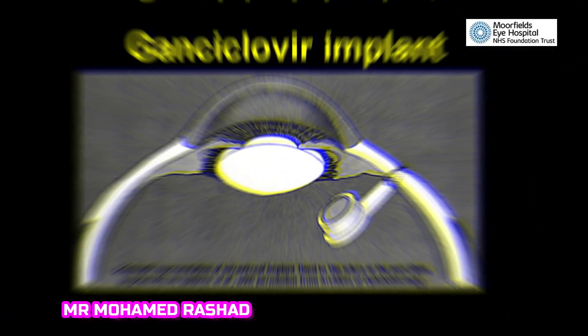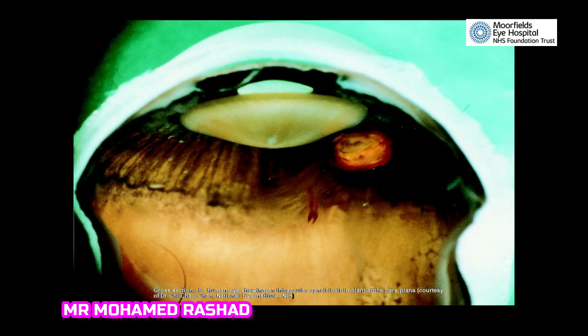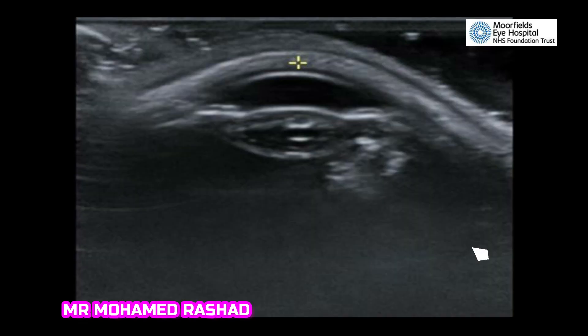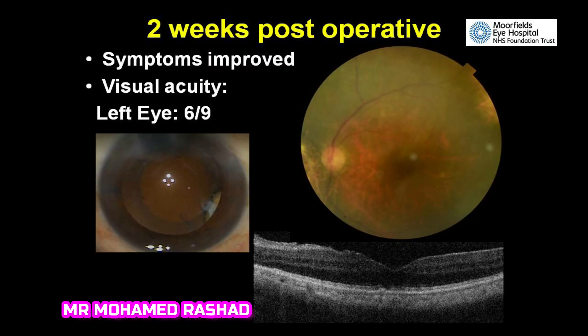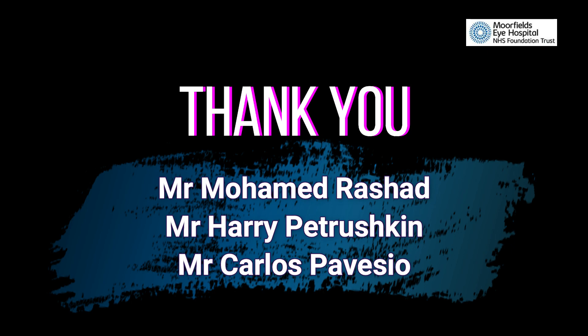We implanted the lens. This happened to be a cyclover implant, and this is from another publication. The B-scan shows a typical appearance of this implant. At two weeks post-operative, the vision is 6 over 9. Thank you for watching.